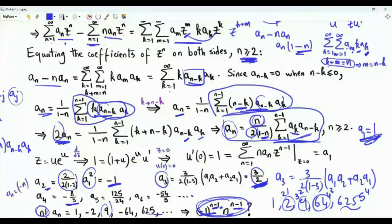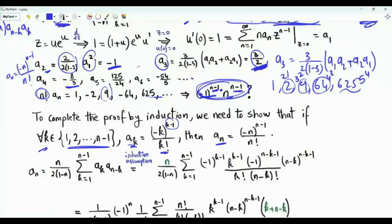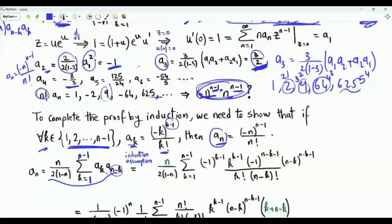To rigorously show that Aₙ equals (−1)^(n−1)·n^(n−1) / n!, we use induction. The small cases are already established. To complete the proof by strong induction, we assume Aₖ equals (−1)^(k−1)·k^(k−1) / k! for every k in the set of positive integers from 1 to n − 1, and we need to show that Aₙ equals (−1)^(n−1)·n^(n−1) / n!. The coefficients involved in the sum are Aₖ and A_(n−k), where k ranges from 1 to n − 1, so we can employ our induction assumption.